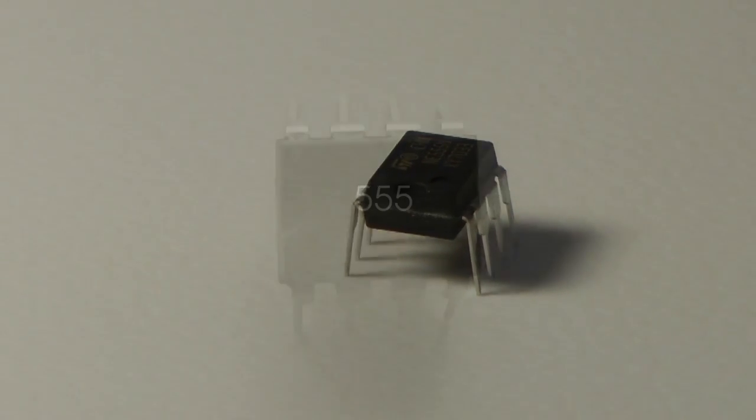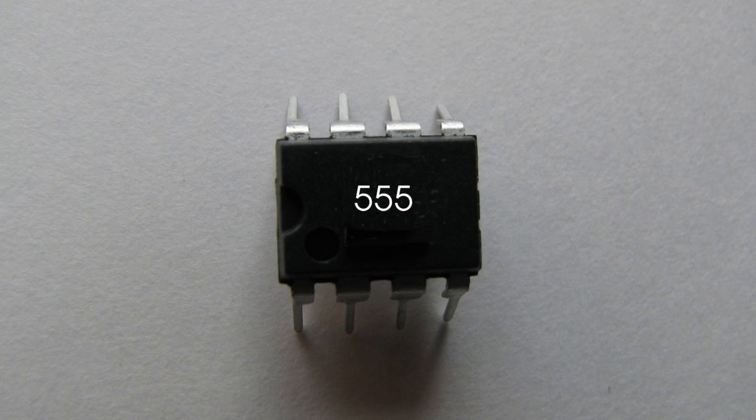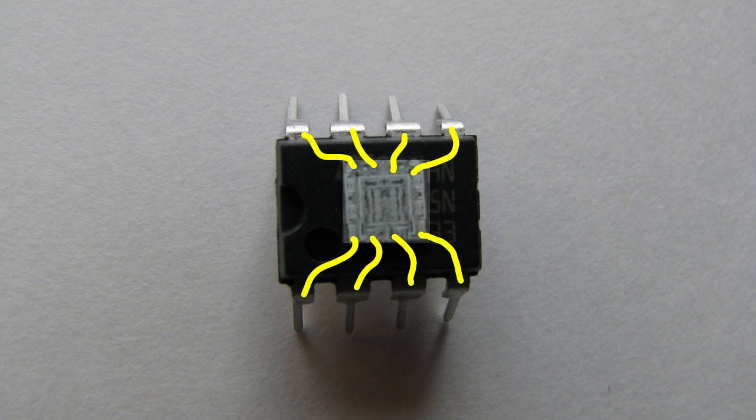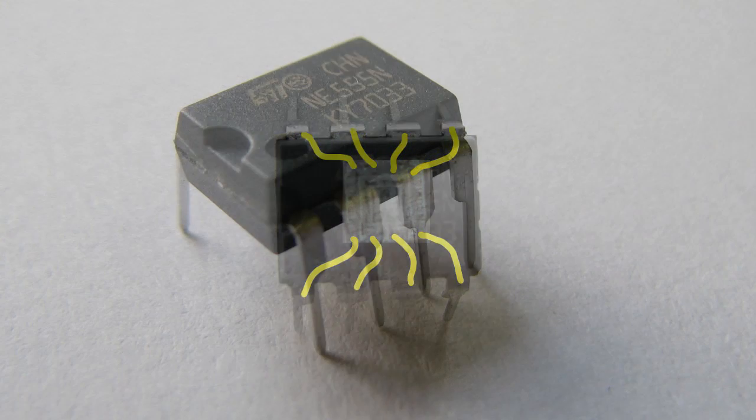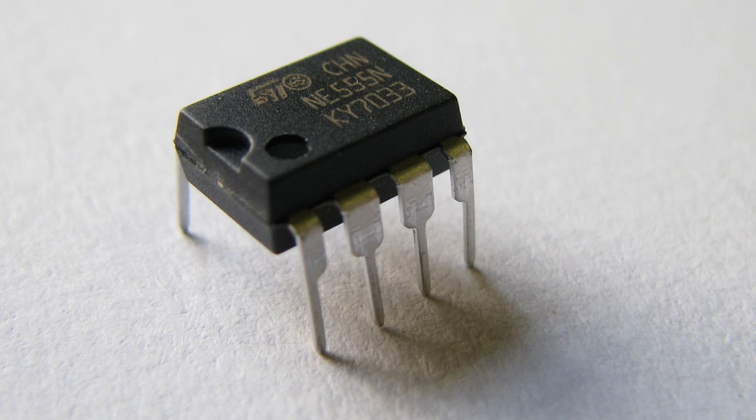This eight pin package contains a 555 integrated circuit. Fine wires connect the microchip to the pins. This type of package with two rows of pins is called a DIP or dual inline package.